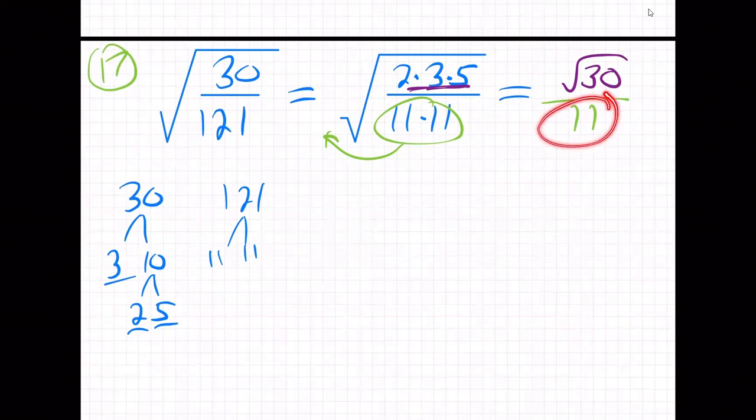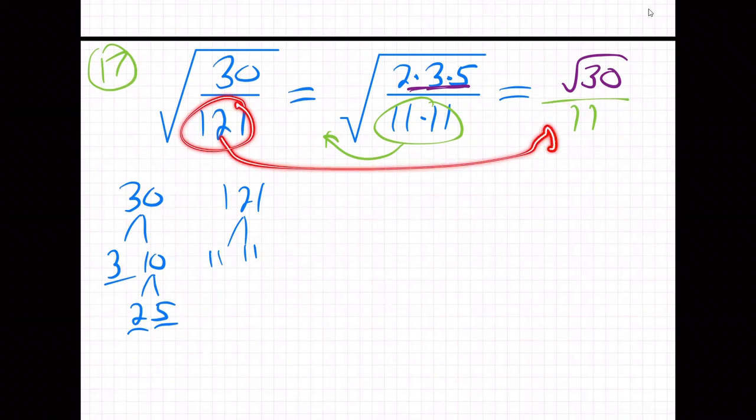You might wonder, why is there no square root on the bottom? Because I square rooted the 121 on the bottom, so the root is gone. It did its job on the bottom. You can square root the 121